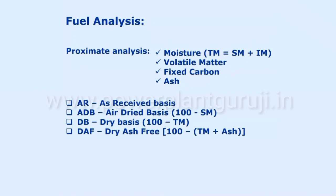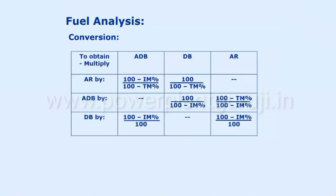There are certain relationships between these bases. Suppose you get an analysis on ADB — air-dried basis — and you want to convert it into as received basis. There are some conversions: algebraically you can find that the total moisture component is missing. If you are having as received basis analysis and want to convert to ADB, you can multiply it by (100 minus IM%) divided by (100 minus CM%). This gives you the relationship between as received basis and air-dried basis.